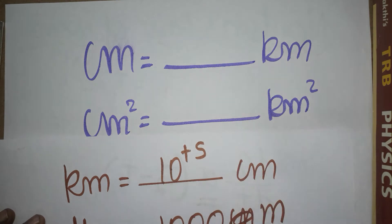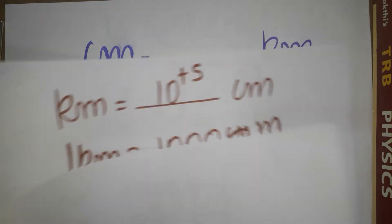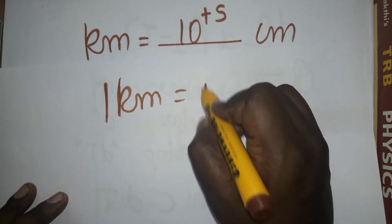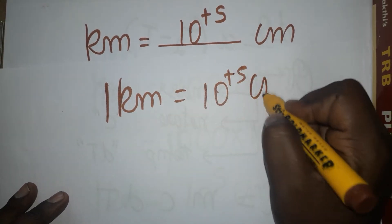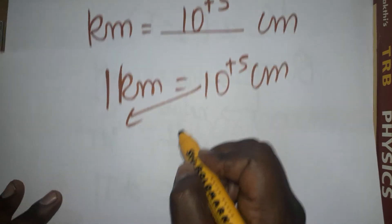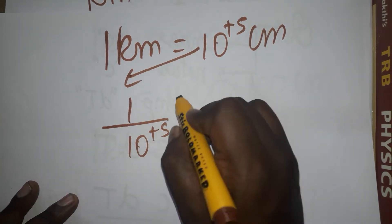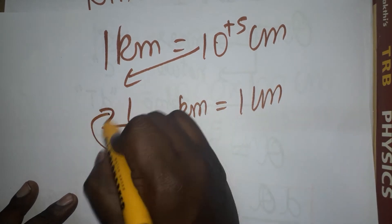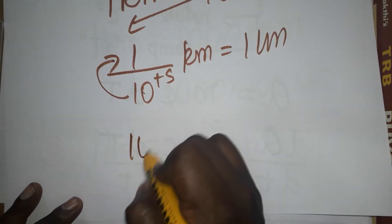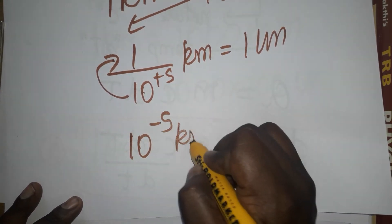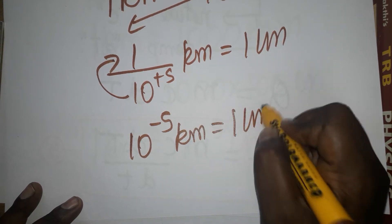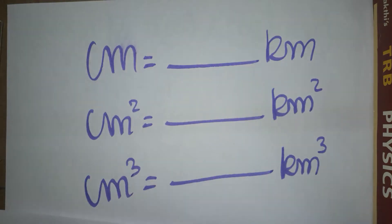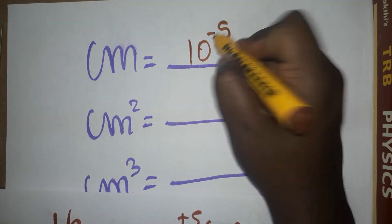Our question is centimeter to kilometer, which is opposite to this. We know one kilometer equals 10⁺⁵ centimeter. Bringing this to the denominator: one divided by 10⁺⁵ kilometer equals one centimeter. Taking the denominator to the numerator gives 10⁻⁵. So one centimeter is equal to 10⁻⁵ kilometer.